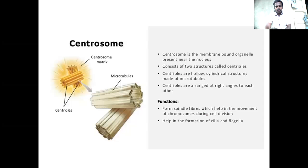Centrosome is a membrane-bound organelle present near the nucleus. It consists of two structures called centrioles. Centrioles are hollow cylindrical structures made of microtubules, arranged at right angles to each other. Their functions include forming spindle fibers which help the movement of chromosomes during cell division, and involvement in the formation of cilia and flagella.